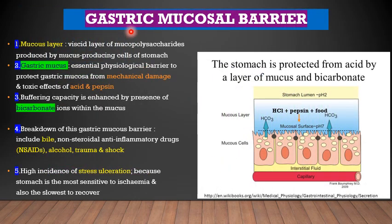Next, we come to the concept of the gastric mucosal barrier, which refers to a thin layer of mucus consisting of polysaccharides produced by the gastric cells. These gastric cells produce mucus which coats the luminal surface of the gastric cells. This gastric mucus acts as a protective mechanism from mechanical damage and from the toxic effects of acid, pepsin and the contents of food. This buffering capacity is enhanced by the bicarbonate ions that are also released into this mucus layer, making it an alkaline surface.